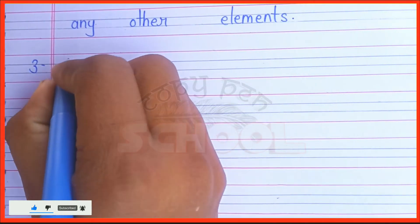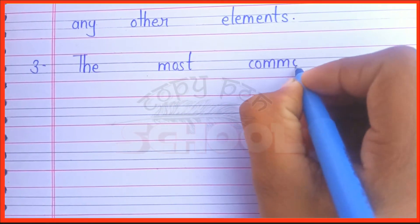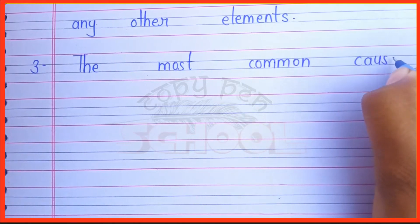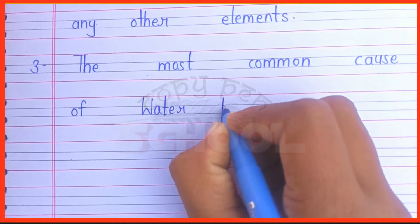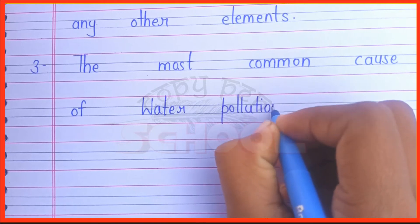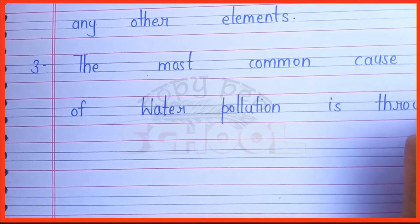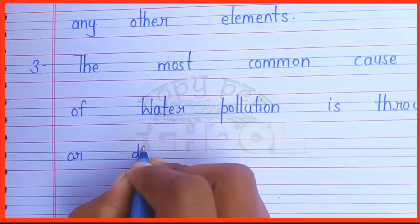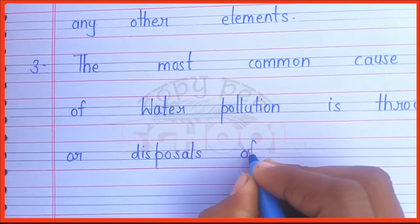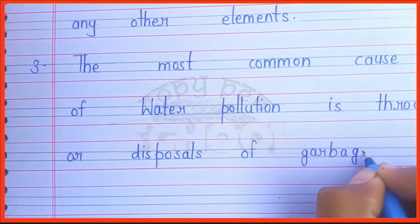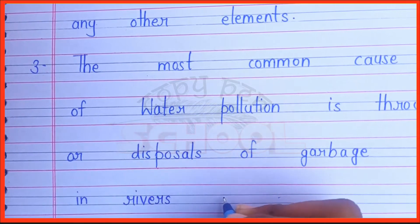Number 3. The most common cause of water pollution is throwing or disposal of garbage in rivers and seas.